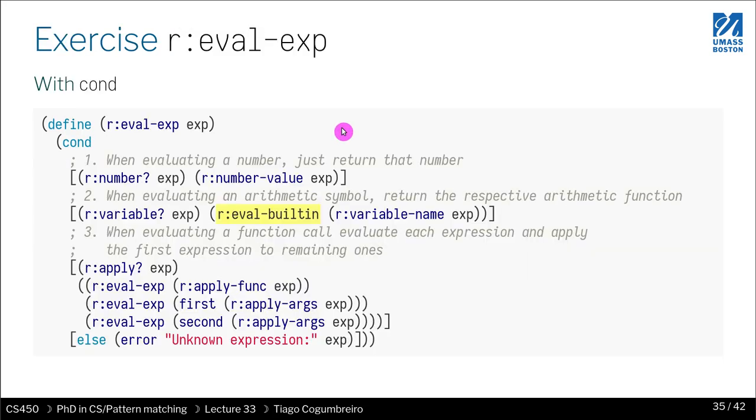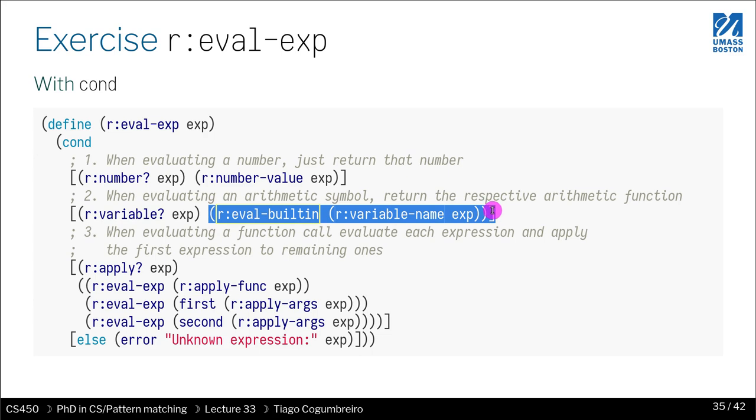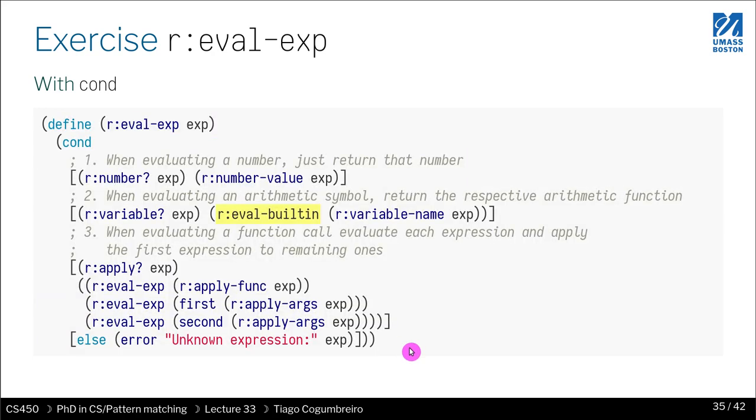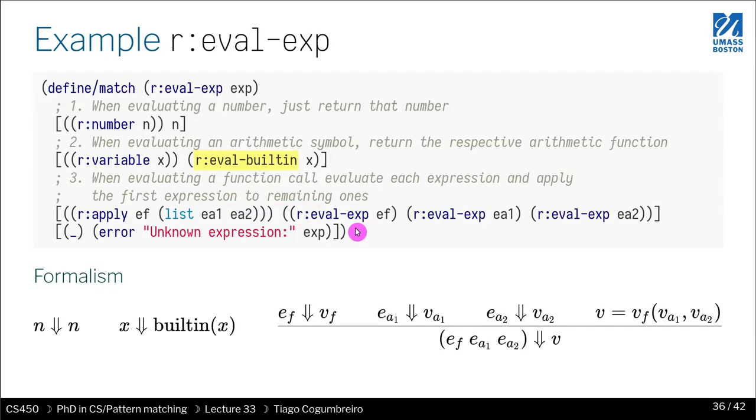And now the interesting part. So now you might remember the code that we had, right? We already optimized the first function eval built-in to use the pattern matching expression we had before. Now what we can do is we can try to rewrite this code, now that we know how to do pattern matching on structures. Let's see how we could rewrite these codes to take advantage of the match construct.